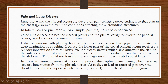Pain and lung disease: lung tissue and the visceral pleura are devoid of pain-sensitive nerve endings, so pain in the chest is always the result of conditions affecting the surrounding structures. If there is any problem in the lung tissue or in the visceral pleura, there will be no pain.